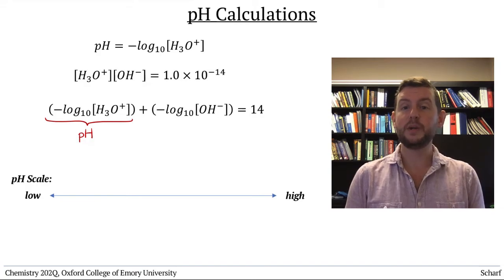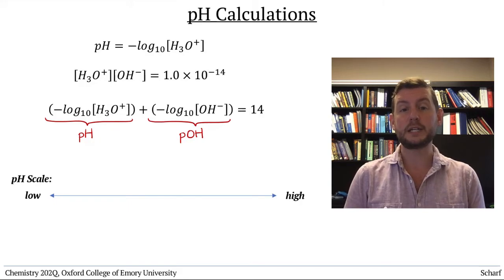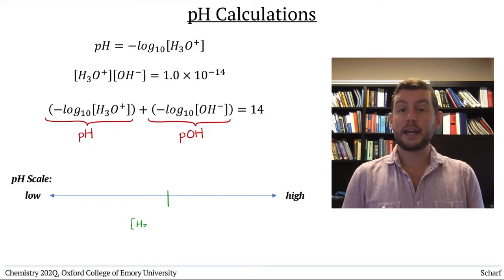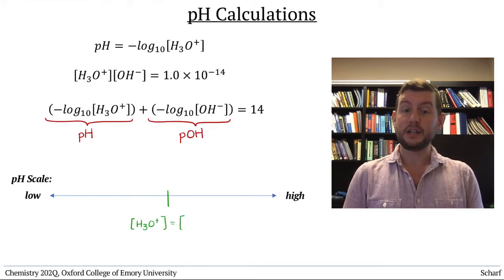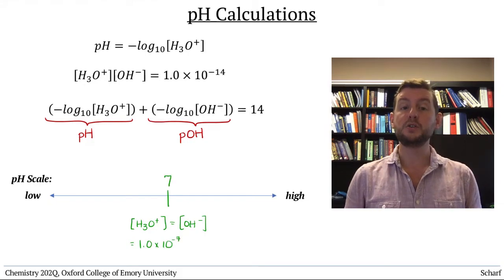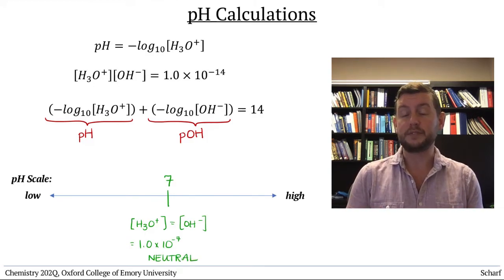This value we call pOH, so pH plus pOH equals 14. When the concentrations of H3O+ and OH- are equal, they both must be 1.0 times 10 to the minus 7. We say that the solution is neutral, and it has a pH of 7. Of course, it also has a pOH of 7.